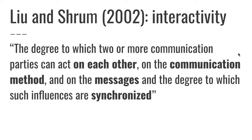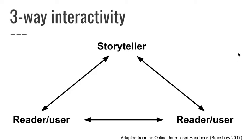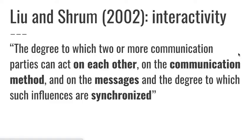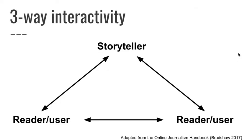Being able to have control over the communication method might mean you have a choice whether to experience a story through audio or video, for example. Being able to have control over the messages themselves — there might be some form of interactivity where you enter your name and that changes the content presented to you, so at a very simple level it might just address you by your first name. This is a diagram from my book, the Online Journalism Handbook, which illustrates that particular dimension of interactivity.